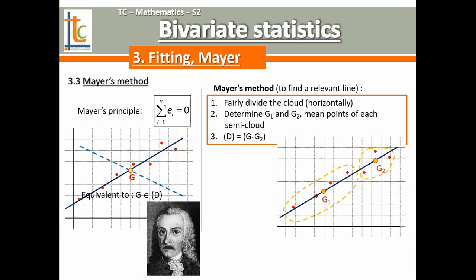So it's a fact that, mathematically, G, the midpoint of the whole cloud, belongs to the line G1, G2. And it's between G1 and G2. So I'll let you try to know why. This kind of line always contains G, the global midpoint of the cloud. So it's good news for Mayer, because that means that this line meets Mayer's principle. It corresponds to a sum of residues that is zero.